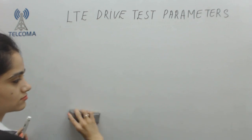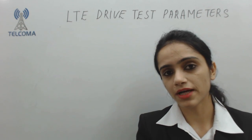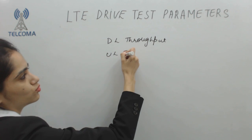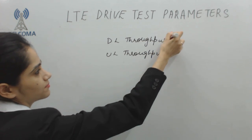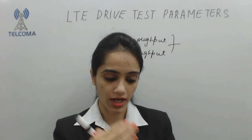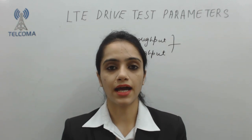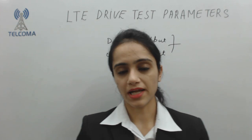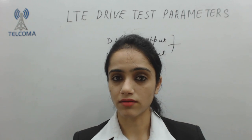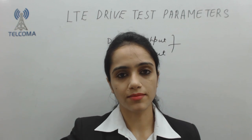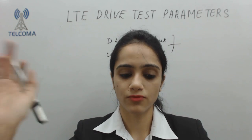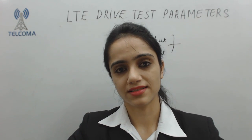The last parameters do not have any specific values but we require to monitor what downlink throughput and uplink throughput we are getting in a particular area. We require to connect to the internet, upload some files, and calculate the uplink and downlink speed in an area. So these are the parameters we discussed today: RSRP, RSRQ, RSSI, SINR, CQI, PCI, BLER, and downlink and uplink throughput — which we require to monitor on a daily basis when performing LTE drive test. If there is an error in any one of the parameters, we require to optimize that. This is all for today; we will continue in our next class. Thank you so much.